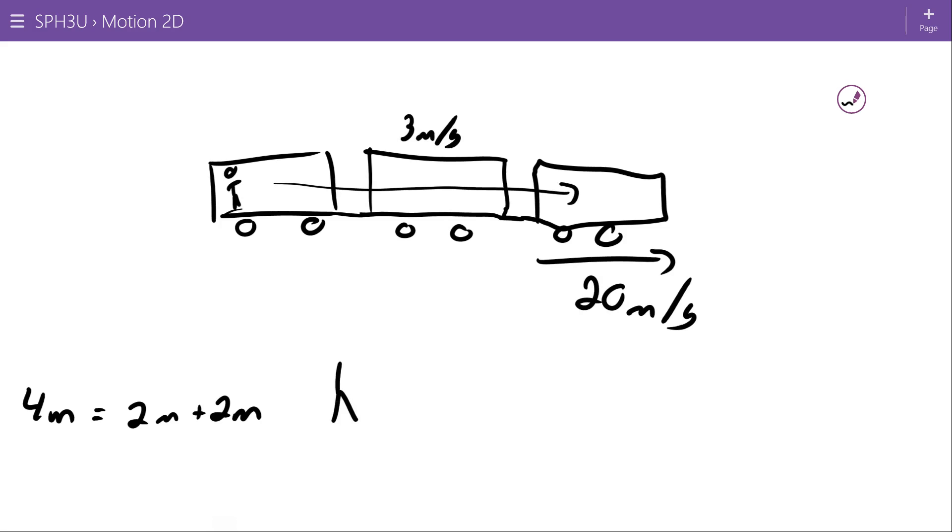If I was standing here, what would I see? Alternatively, if I was standing on the train, what would I see? So the person standing on the train would see the velocity of the object relative to the train to be 3 meters per second. That's from this point of view.